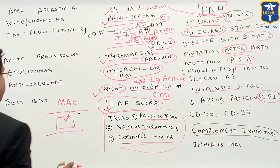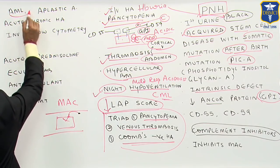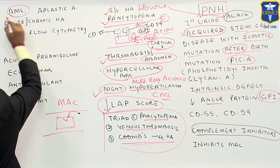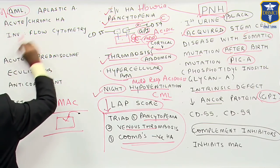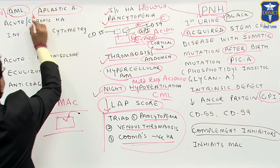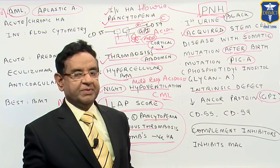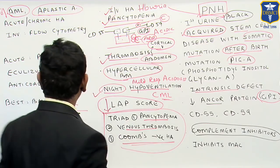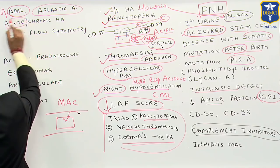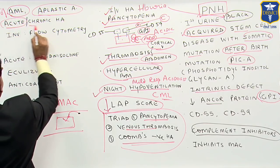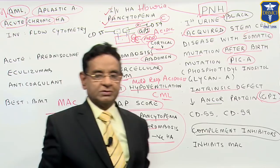What other complications can occur? Acute myeloid leukemia can occur in around 10 percent of cases. Aplastic anemia or aplastic crisis can also occur in this patient. The patient may manifest as acute hemolytic anemia, or sometimes the patient may come with chronic hemolytic anemia.